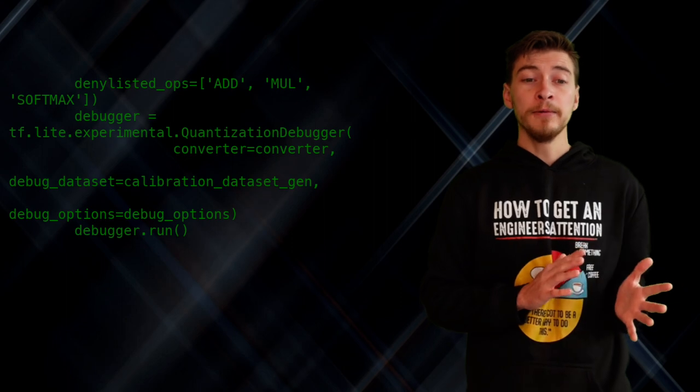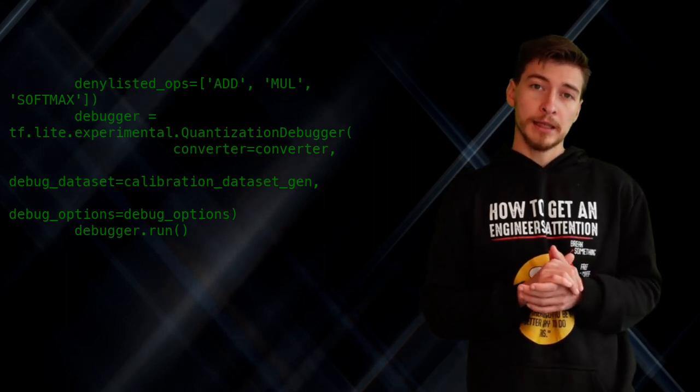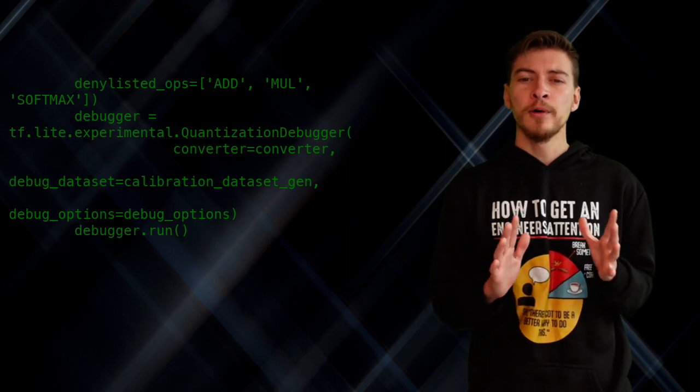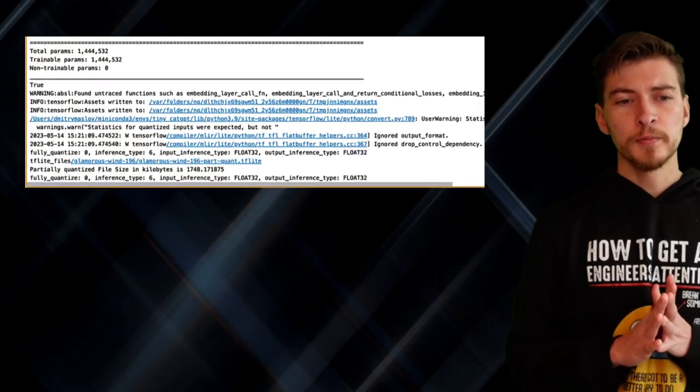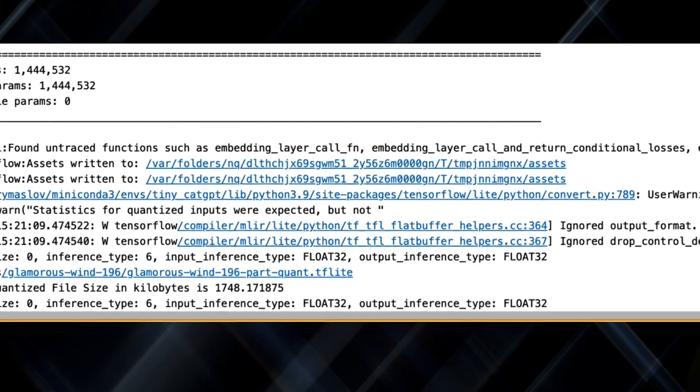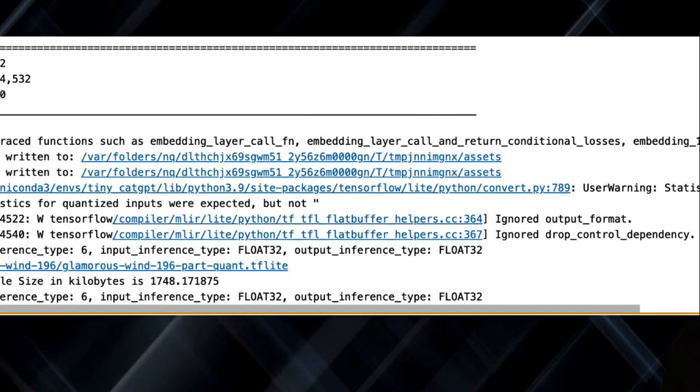In the end, it was more of a trial and error procedure, but I found that skipping add, multiply, and softmax operations when quantizing the model - in other words, leaving these operations as float32 - allows to preserve the accuracy of the model. The trade-off here was about 100 kilobytes. Not great, not terrible, but needs more research.